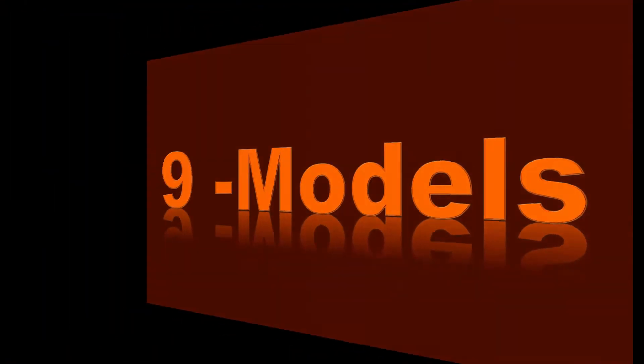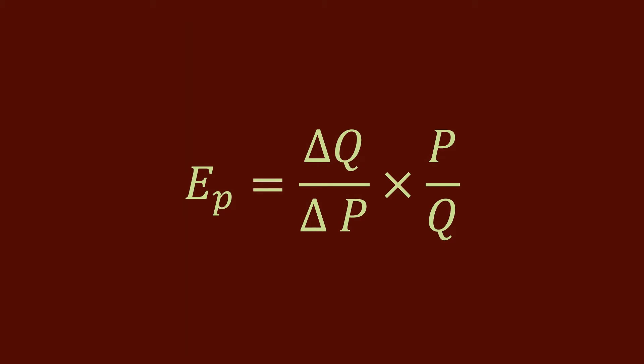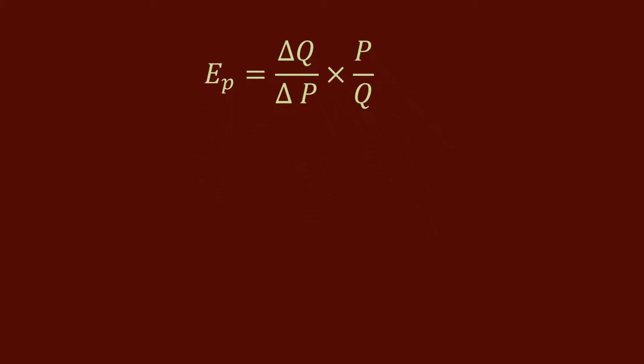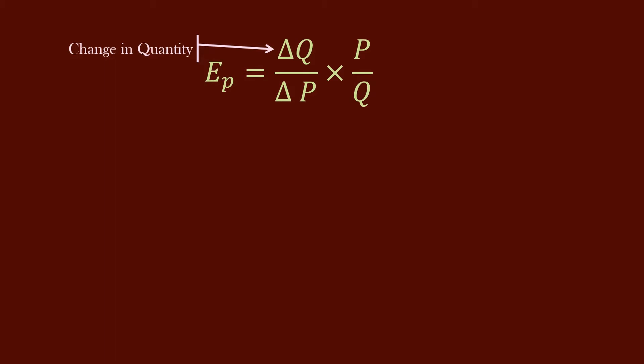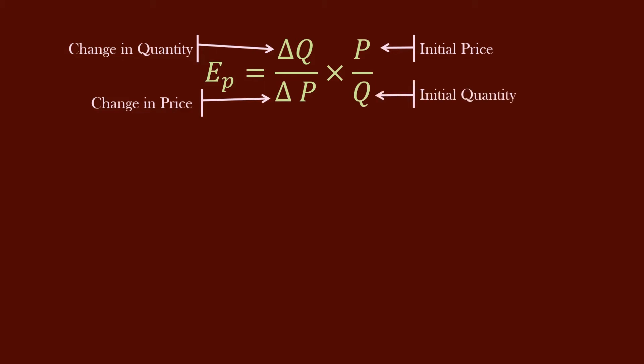Normally, in most of the textbooks, you will find this formula: Elasticity of Demand is equal to Delta Q by Delta P times P by Q, where Delta Q is change in quantity, Delta P is change in price, P is initial price, and Q is initial quantity. This formula is absolutely correct. But to tackle a twisted problem, it is better to have an expanded version of this formula.